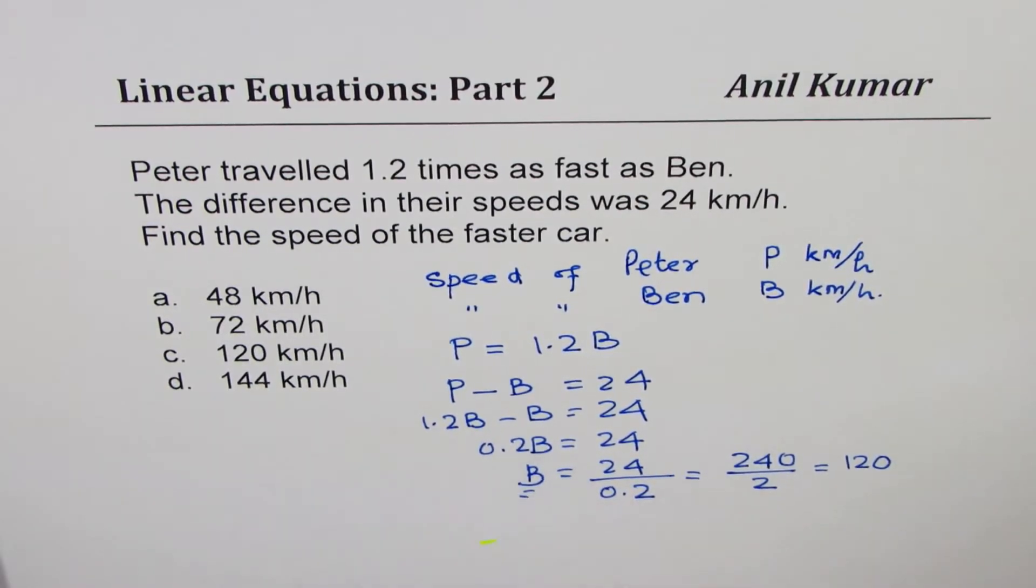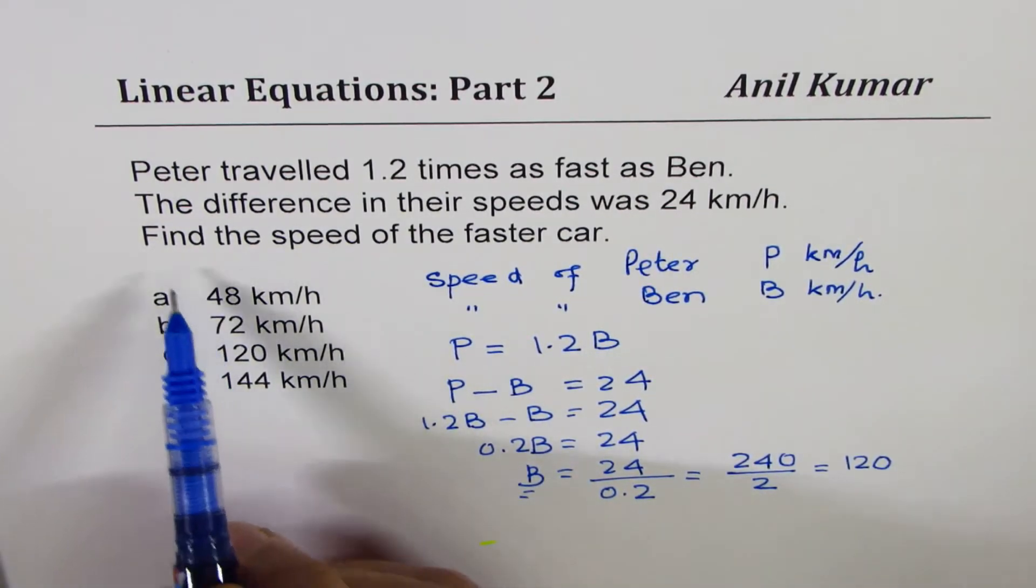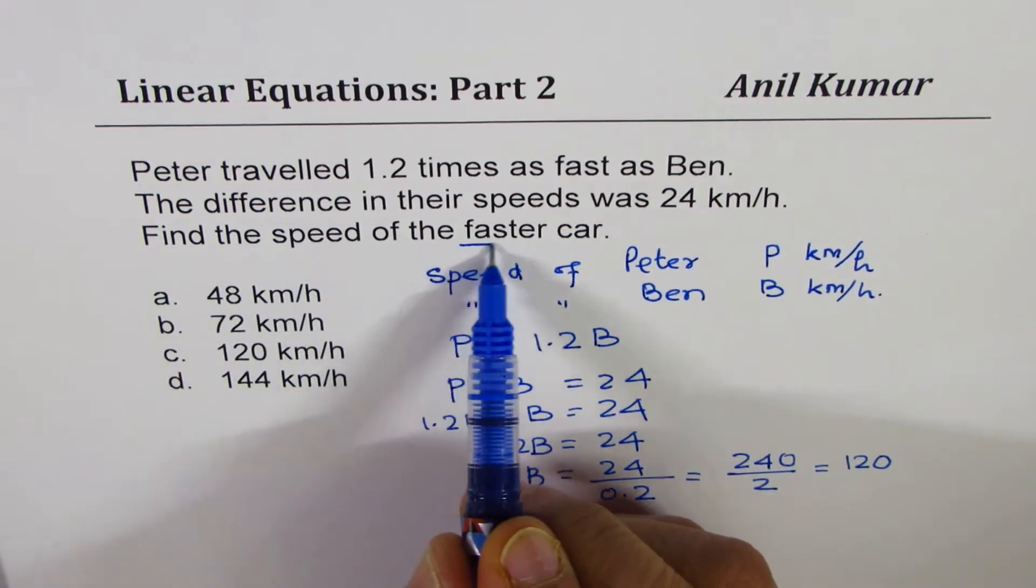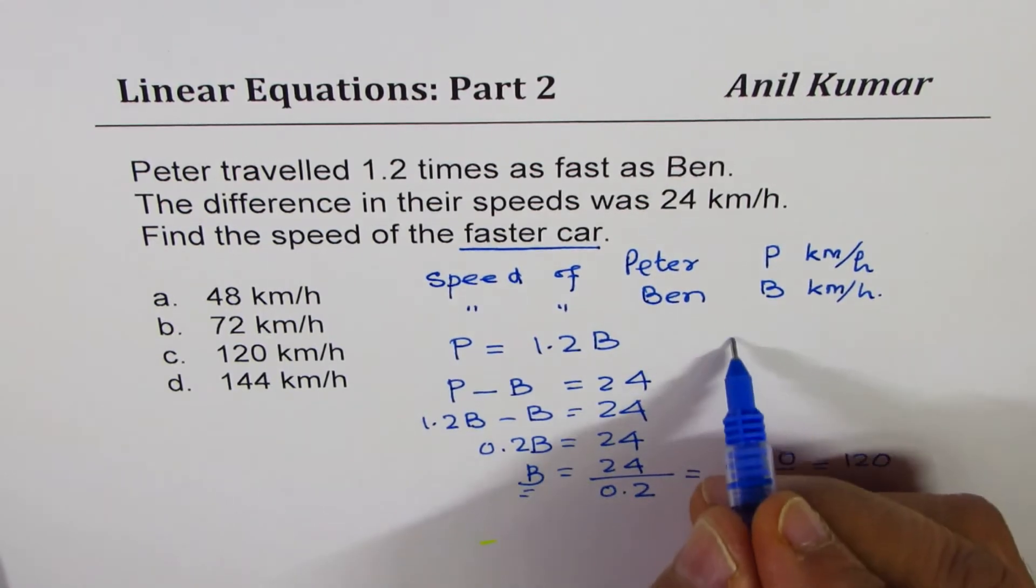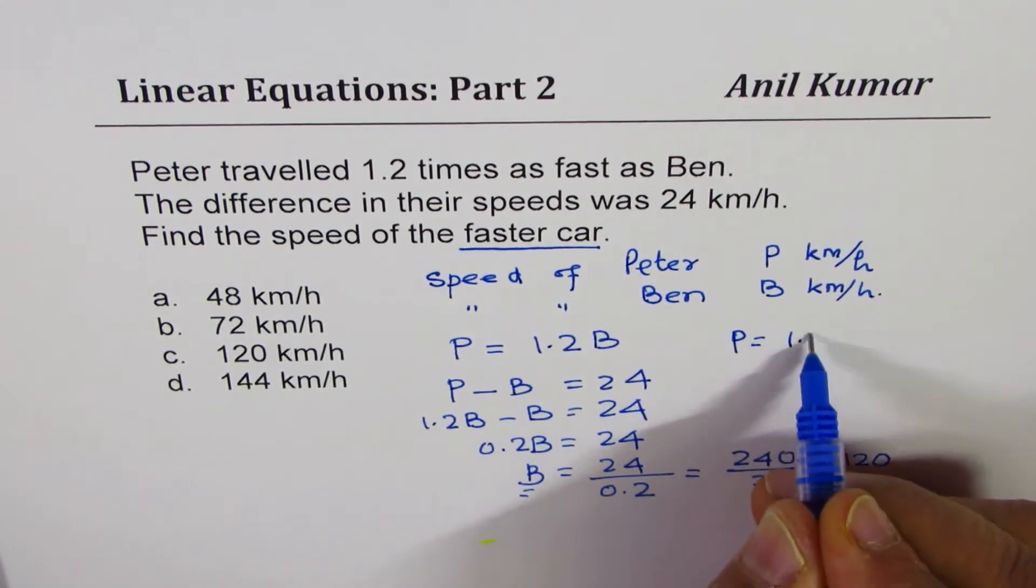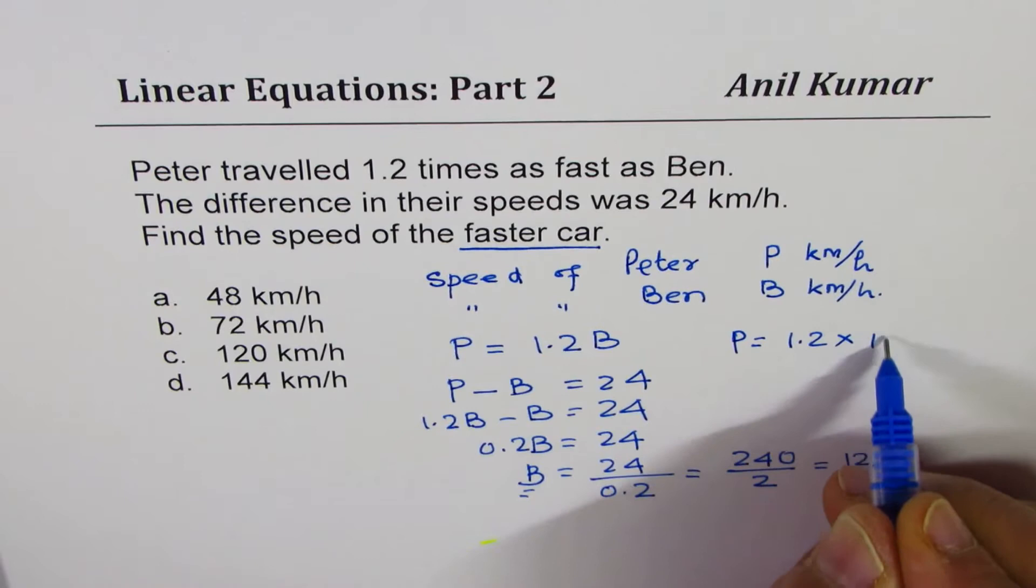Now, 120 is speed of Ben. We want to find the speed of faster car. Faster car is p. So p's speed will be 1.2 times 120.